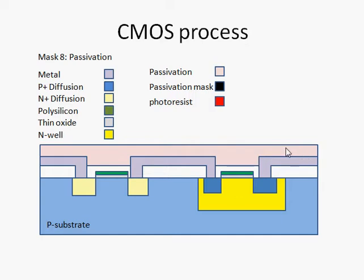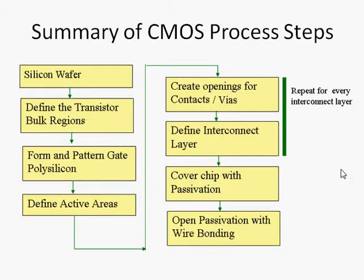Let's summarize the CMOS process steps. We started with a silicon wafer that was P-doped. Then we defined the tub regions — the tub regions are the well and the substrate. We defined the N-well, and the areas not inside the well remain as the P-substrate. In our process, this was an N-well process, so the well is N-doped.